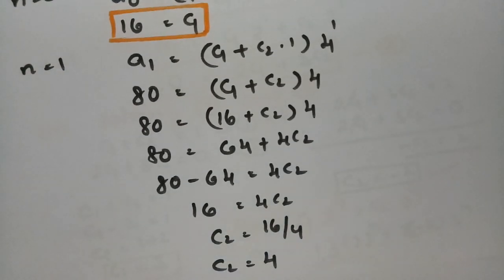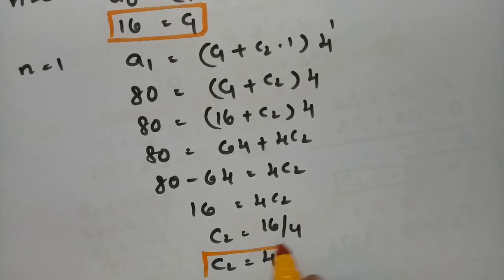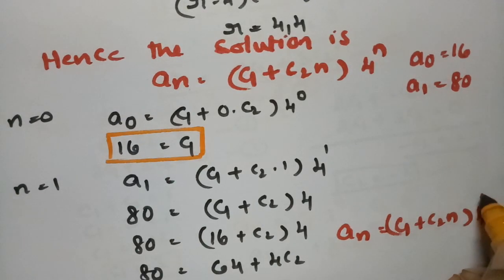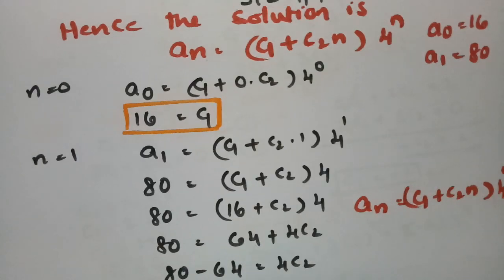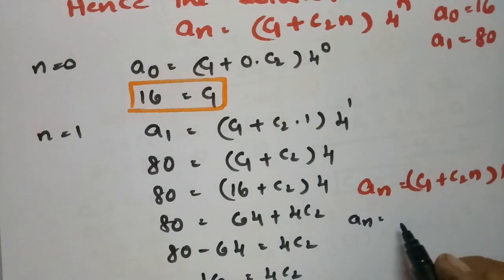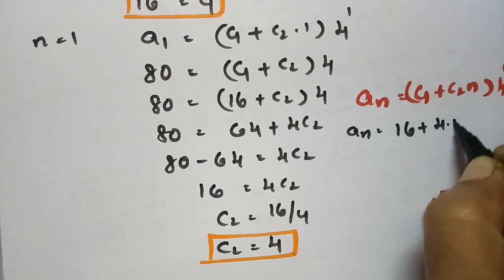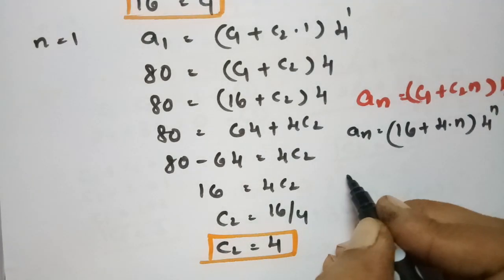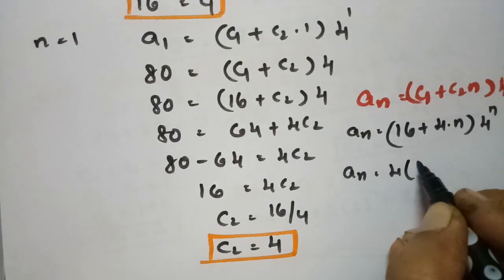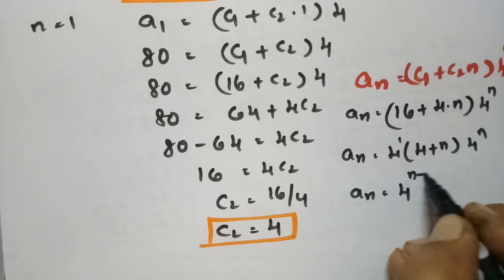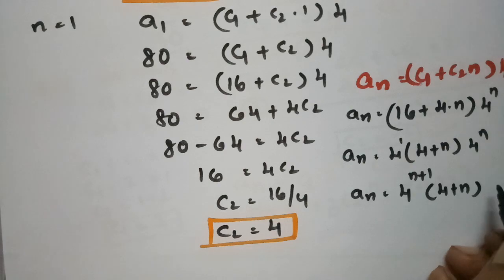After getting C1 = 16 and C2 = 4, substituting into the solution: An = (16 + 4N)·4^N. Taking 4 common: An = 4·(4 + N)·4^N = (4 + N)·4^(N+1). This is how we solve second-order homogeneous recurrence relations with equal roots.